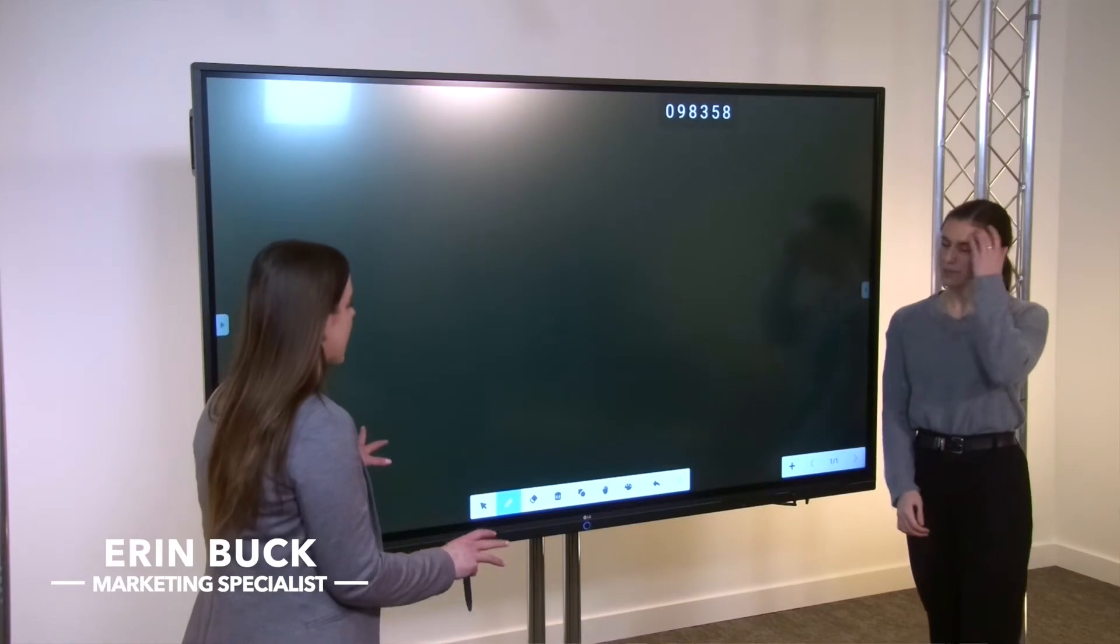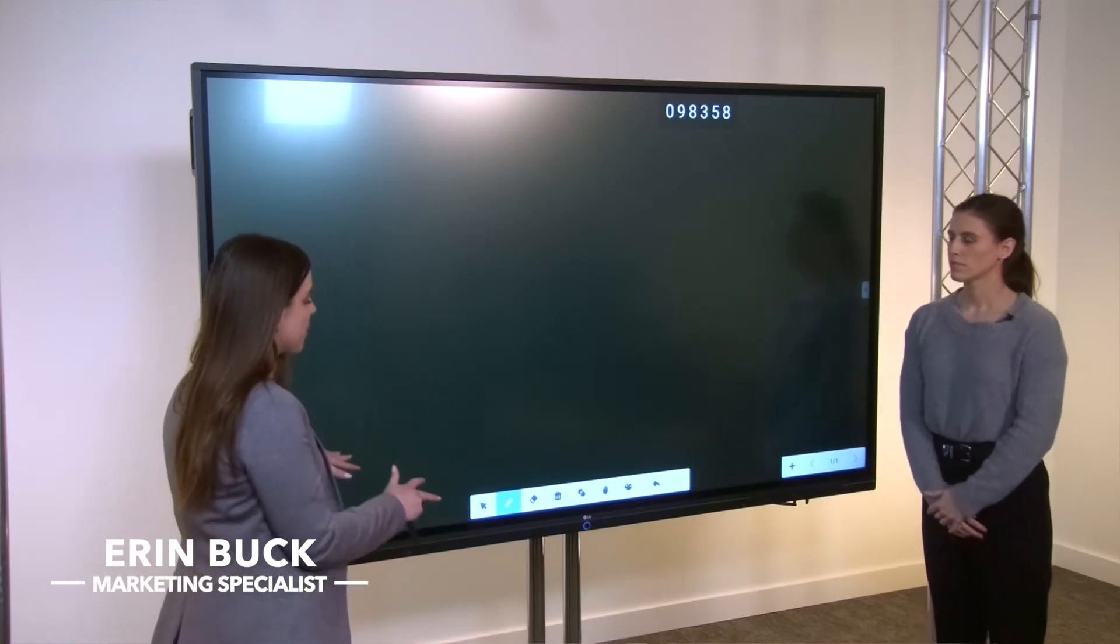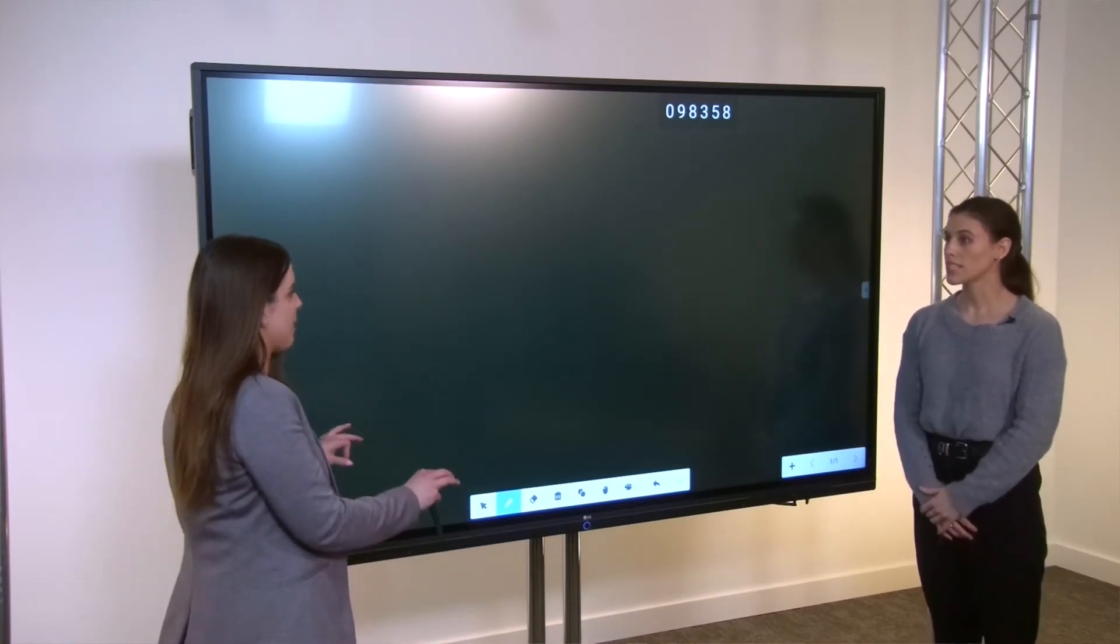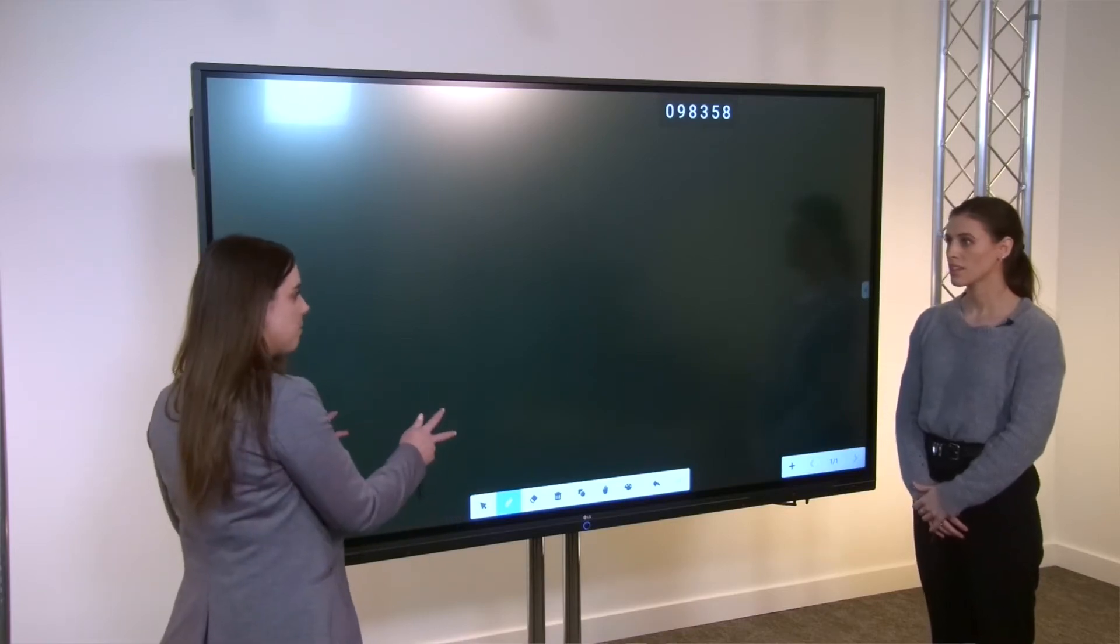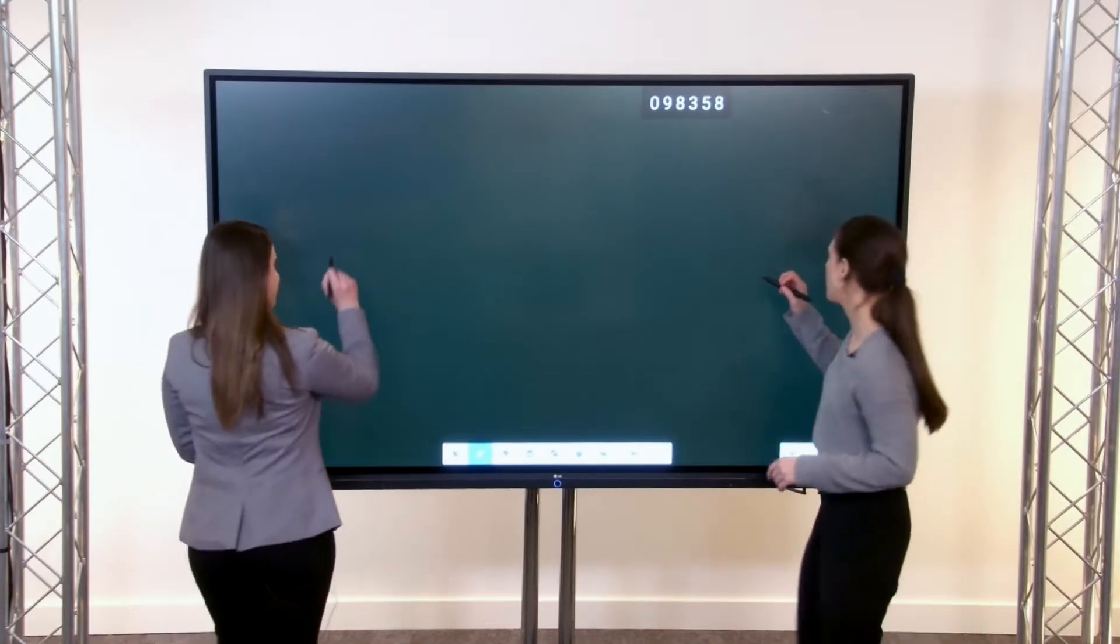Okay, correct me if I'm wrong, Aubrey, you said that the intuitive touch performance detects up to 40 touch points at a time. Exactly. So you and I, we're students. We can use this at the same time? Exactly. That's great. Can we try that? Yeah, I would love to.